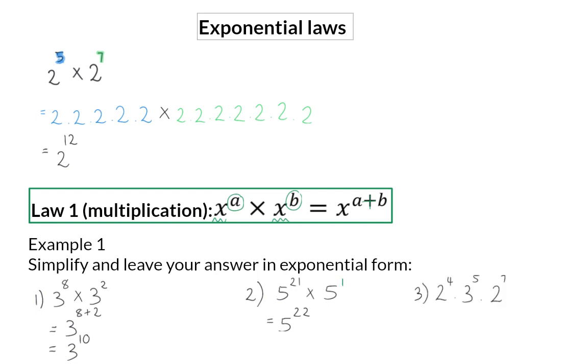In example 3, we now have 3 base numbers that should be multiplied, but only 2 of them are the same base numbers. So here we can put all the 2's together, and using our law and adding the exponents, we will have 2 to the power of 11, meaning that 11 2's are being multiplied. This should then also be multiplied by 3 to the power of 5.